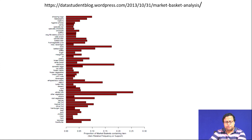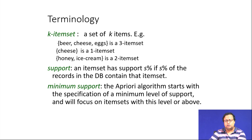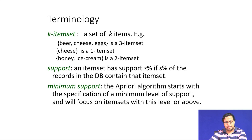We find out all the products and the proportion of market baskets containing these items. The terminology uses K item sets — a set of K items. So a 3-item set means a set of 3 items, a 1-item set means a set of 1 item, and a 2-item set means a set of 2 items.